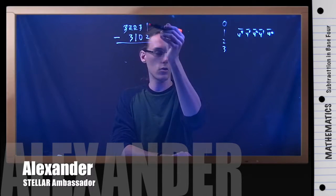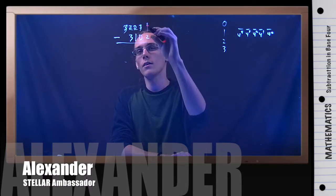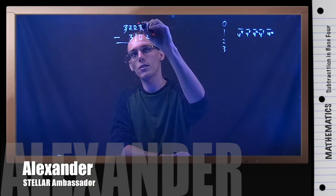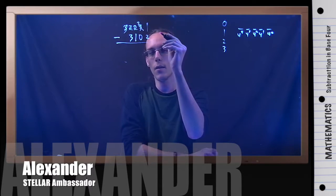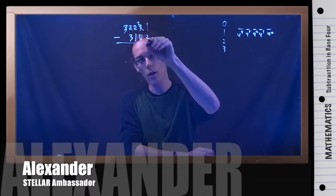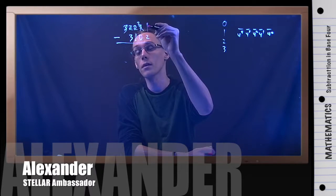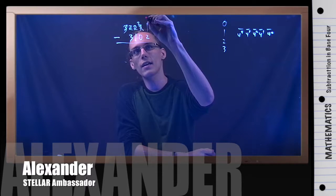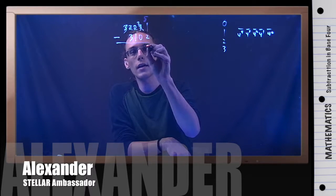First things first, I've got 1 minus 2 in my first column, so I'm going to have to borrow. I'm going to cross out this 3, make it a 2, and I'm borrowing and adding over to the 1 here. The tricky bit is that I'm not adding a 1 — because we're in base 10 that works out nicely, but what I just borrowed was a 4. So 4 plus 1 gives me 5. This isn't one of our allowed symbols, but it's the value we're working with. 5 minus 2 is 3, and I can write 3 in base 4 — that's the biggest symbol we're allowed, so this is okay.